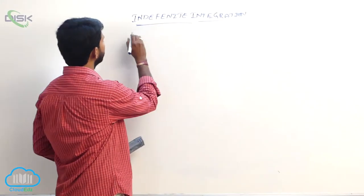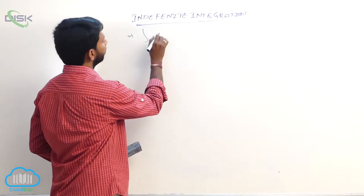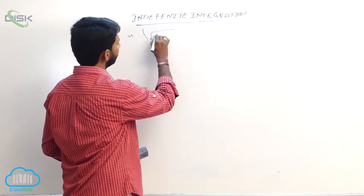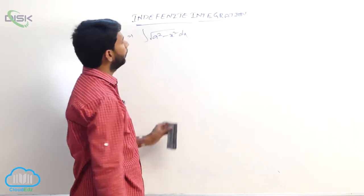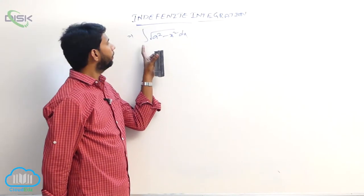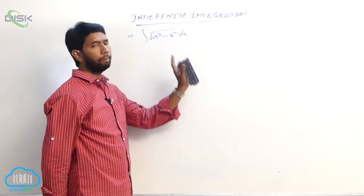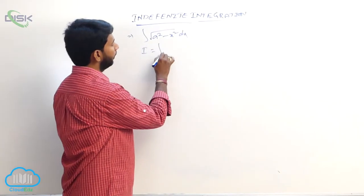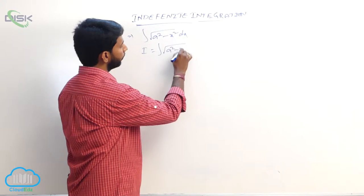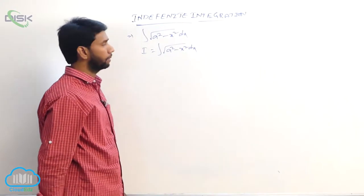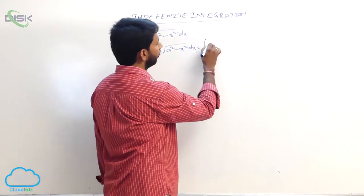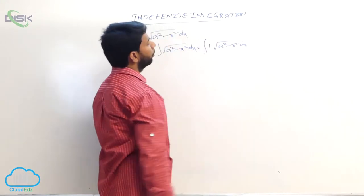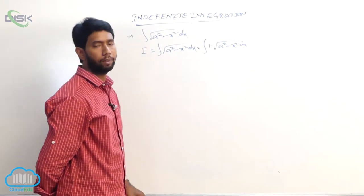One of the proofs: find integral of root of a square minus x square dx by using by parts. Consider i equal to integral of root of a square minus x square dx. It can be written as integral of 1 into root of a square minus x square dx.